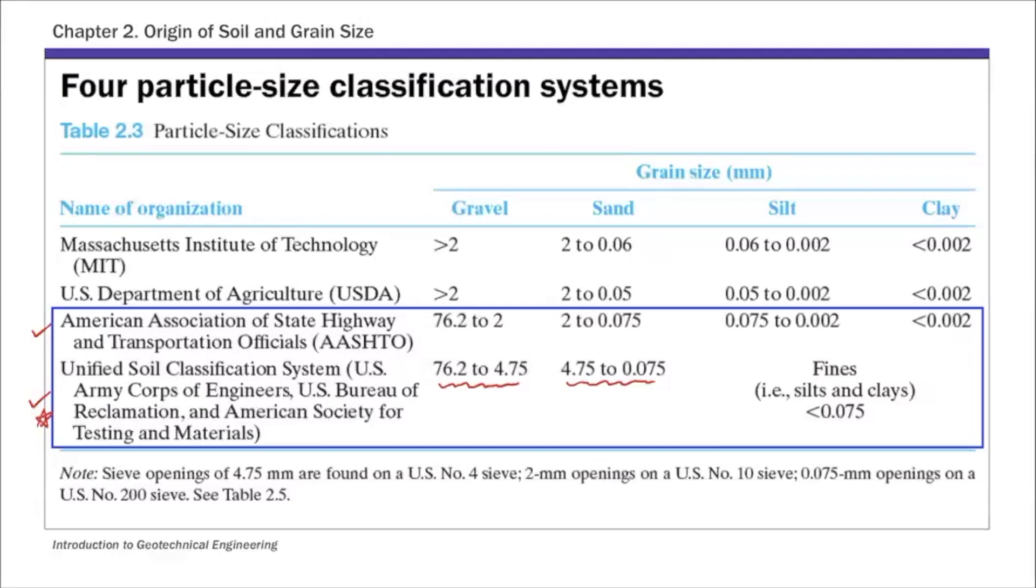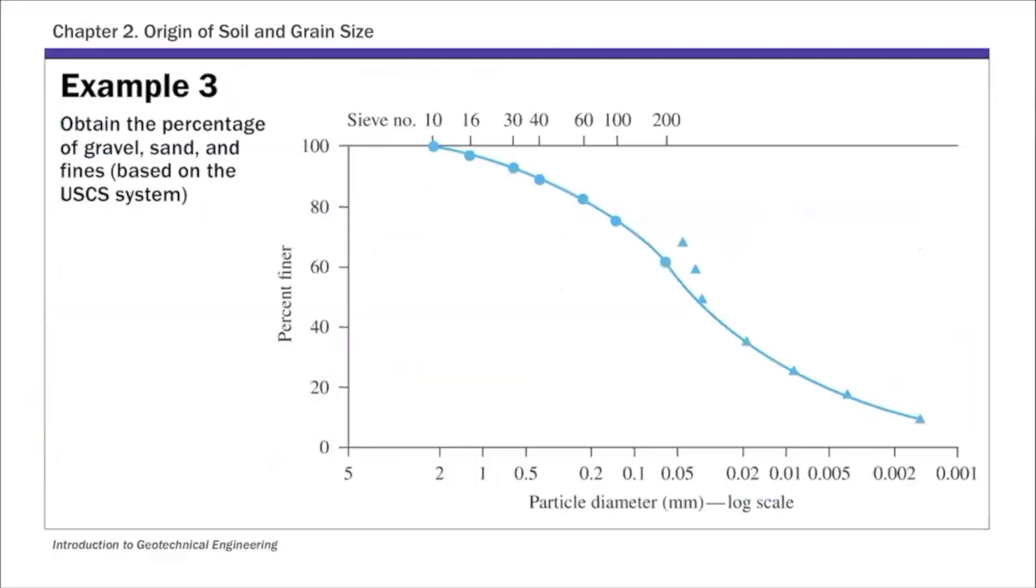That's the USCS system and then we're going to use this system with that PSD curve to basically extract the percentage of different types of soils for the USCS system. The first thing given this curve is to identify these threshold grain size values. Remember there are basically two thresholds, 4.75 which separates gravel from sand and then 0.075 which separates coarse from fines.